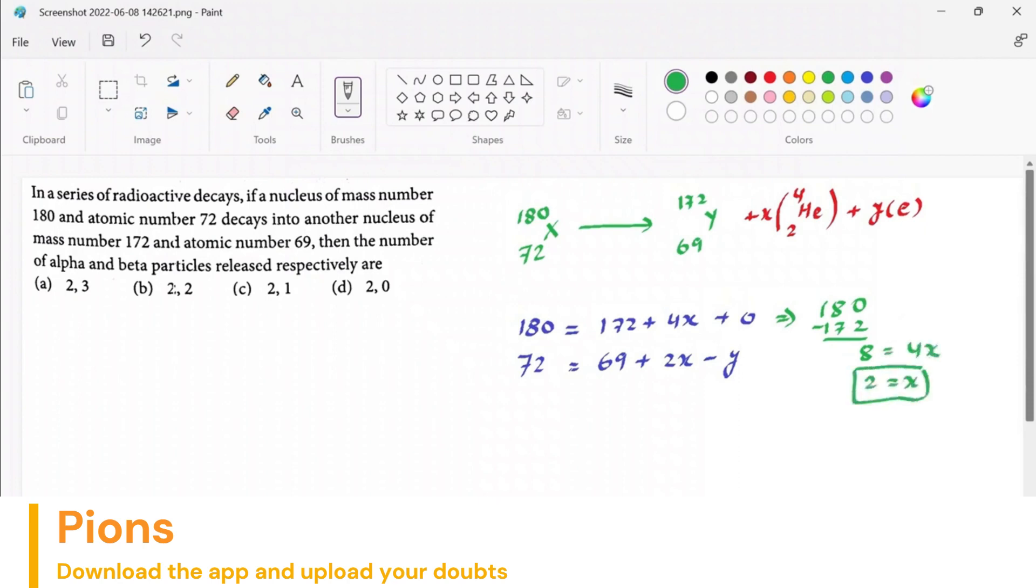If our x value is 2, let's put it in the second equation. 72 minus 69 equals 2 times 4 minus y. So this will be 12 minus 9, which is 3. So 3 equals 4 minus y, so y equals 1.